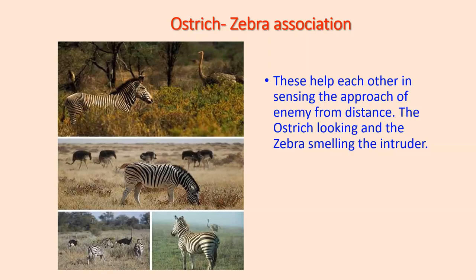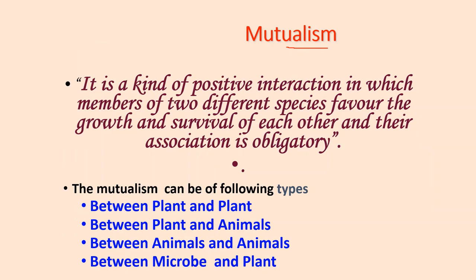The second type of relationship is mutualism. Mutualism can be defined as the kind of positive interaction in which members of two different species favour each other's growth and survival, and their association is obligatory. Mutualism can occur between plant and plant, plant and animals, animals and animals, and microbe and plant.